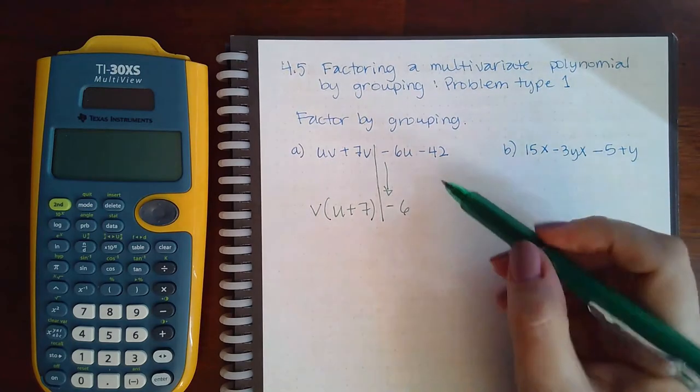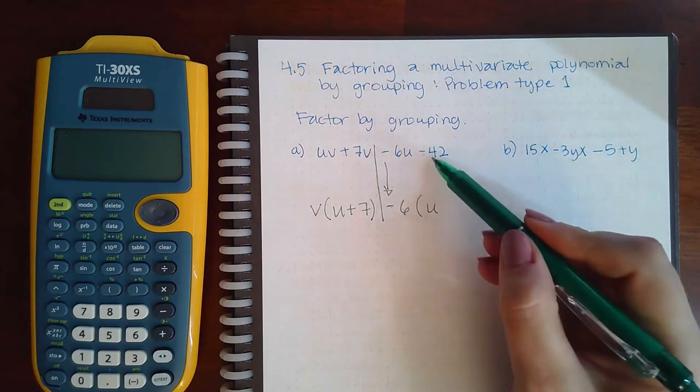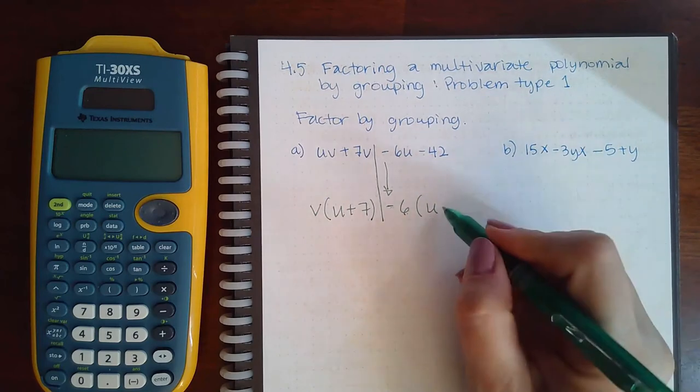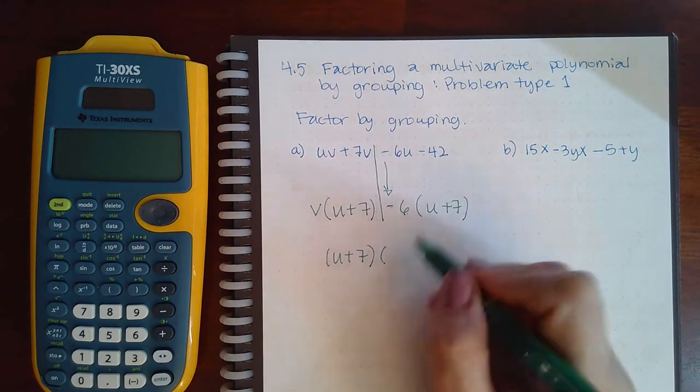These guys can both be divided by 6. Negative 6u divided by negative 6 is a positive u. Negative 42 divided by negative 6 is a positive 7. They both have the u plus 7 in common.